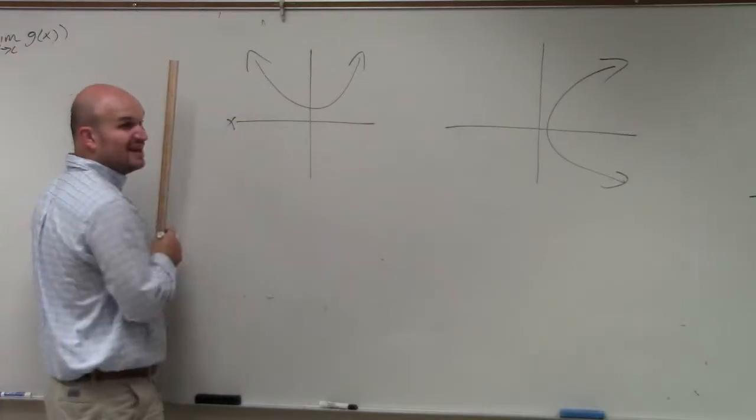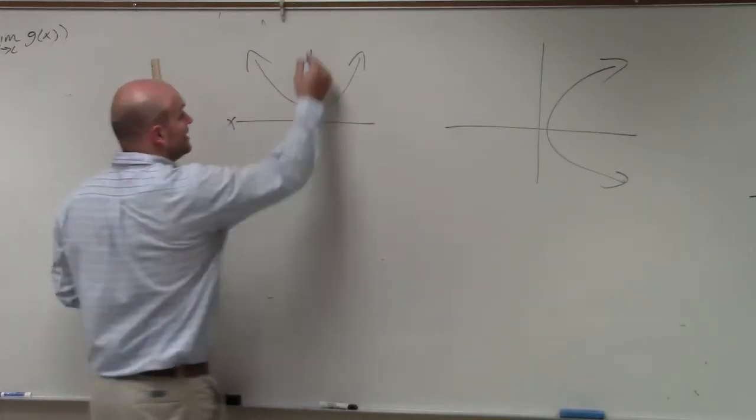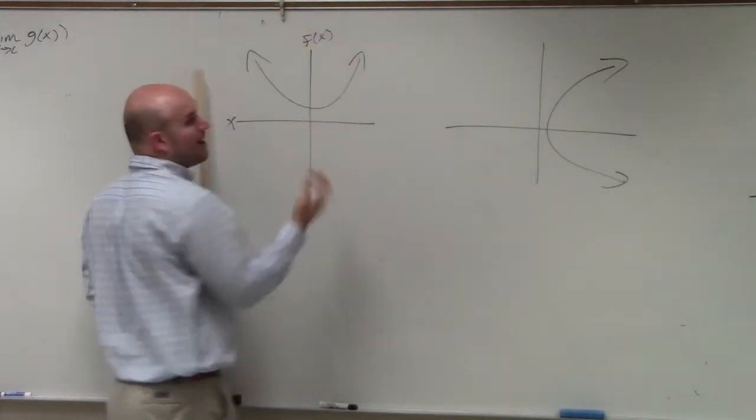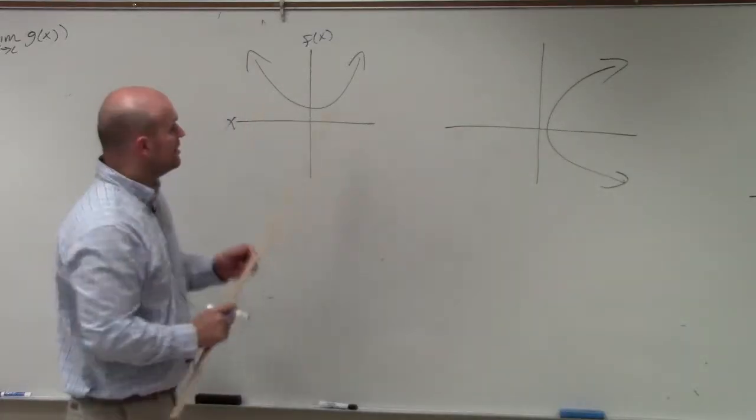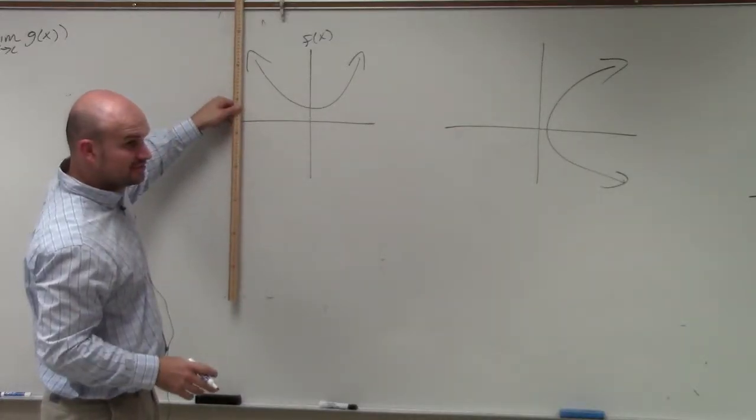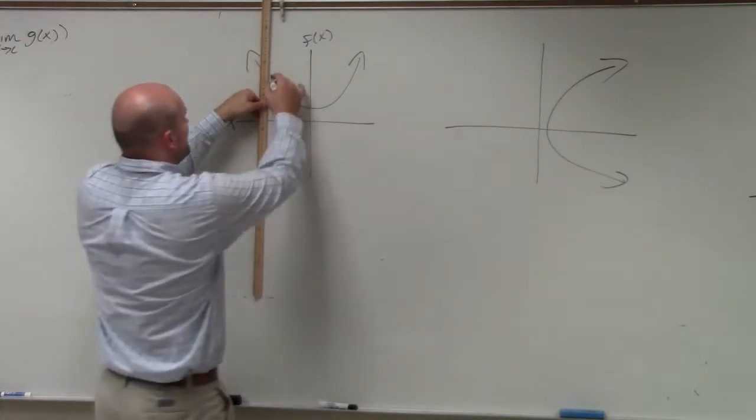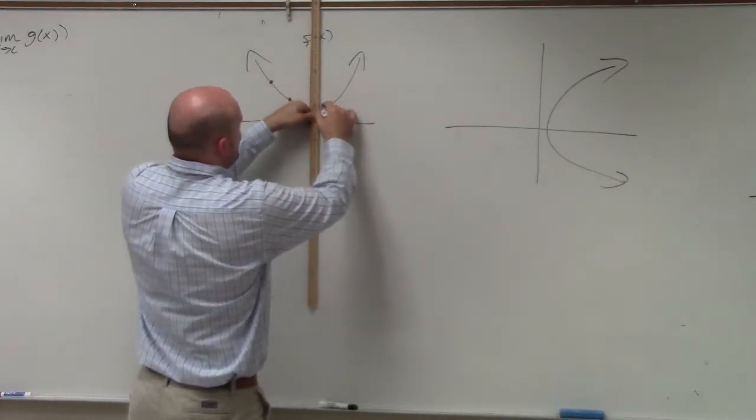here's our x values. X values are our input. Here's our f of x values, or y values, which is our output. For every x value, I can only have one y value that makes up the graph.